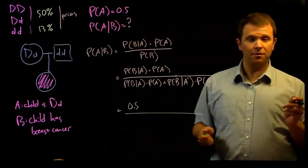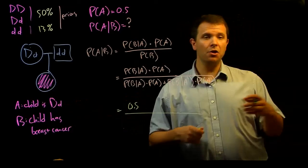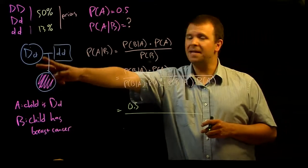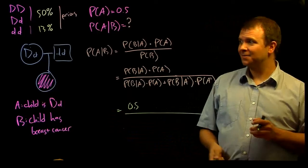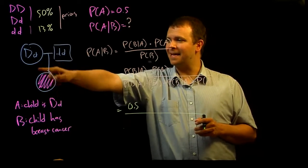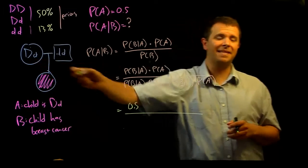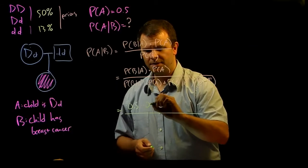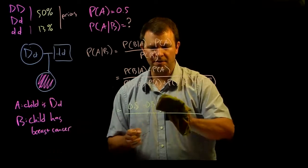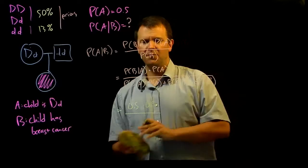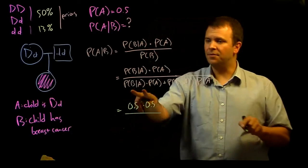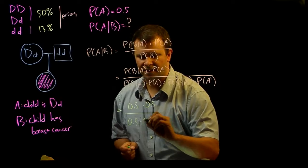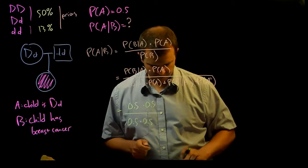We also know the probability of A. We know the probability that this child is a heterozygote because of transmission genetics. The probability that they are a heterozygote is the probability that they got that dominant allele from their mother. So that's also 0.5. We can go ahead and fill in those same numbers down here in the denominator, 0.5 times 0.5.